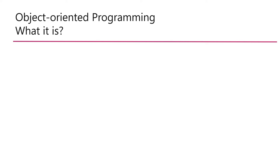Object-oriented programming — what is it? I found a couple of great explanations, and to be honest all of them are correct. The main idea is how much we abstract ourselves away from it. The first definition is: it's a way to model the real world. That doesn't say much on its own — it's too abstract. I took it from the book called Clean Architecture by Bob Martin, an amazing book that everyone should read.